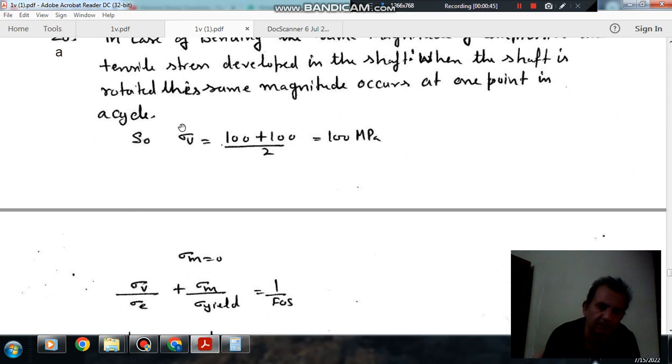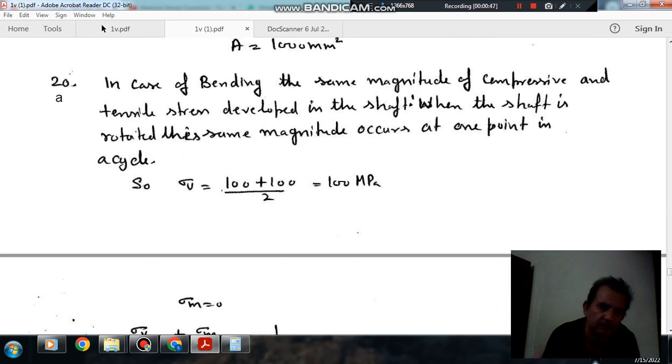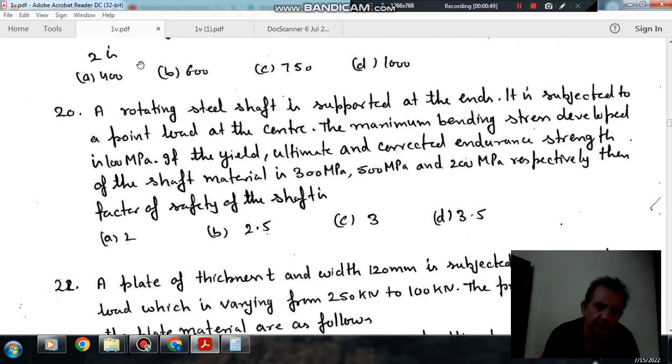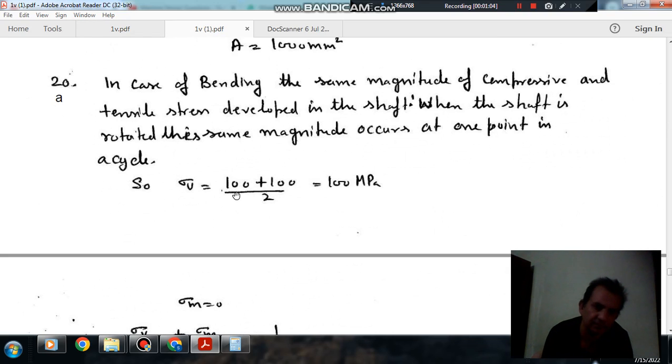As the shaft is rotating and the maximum bending stress is 100 MPa, there will be alternating tensile and compressive stress at the same point due to bending. The maximum tensile stress is 100 MPa and maximum compressive stress is minus 100 MPa.